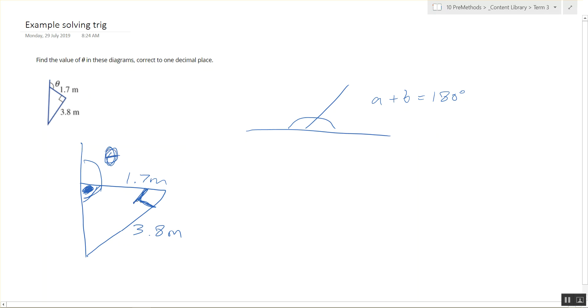Alrighty. So, let's start determining what we know. We know this is the right angle, this is the hypotenuse. So, we know if we're trying to find that angle, that's adjacent.